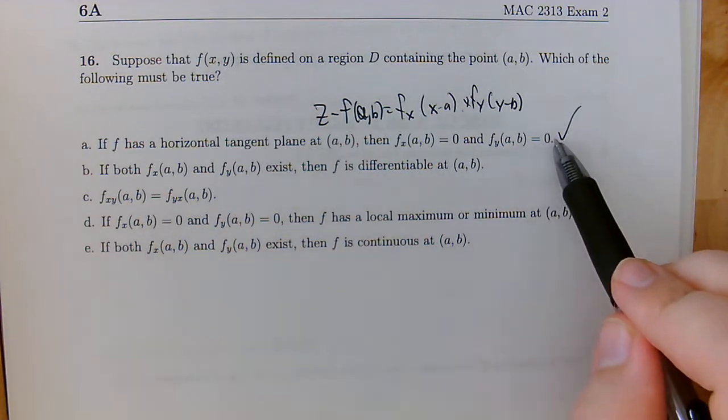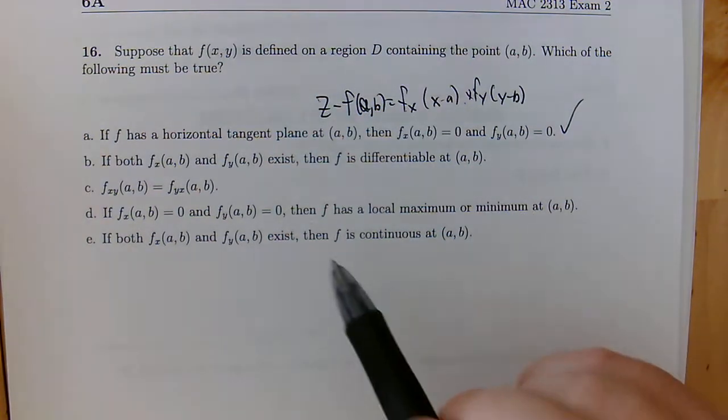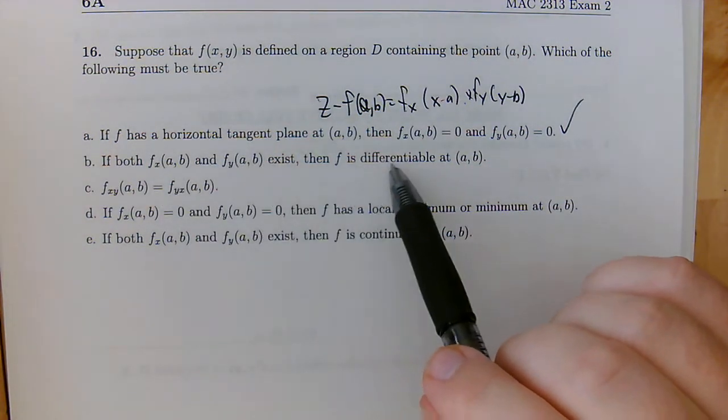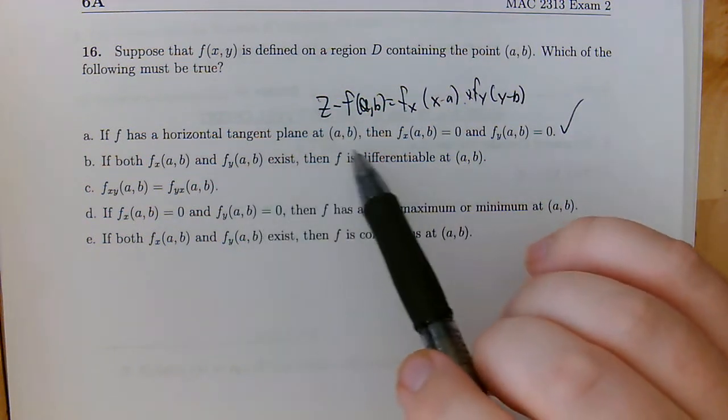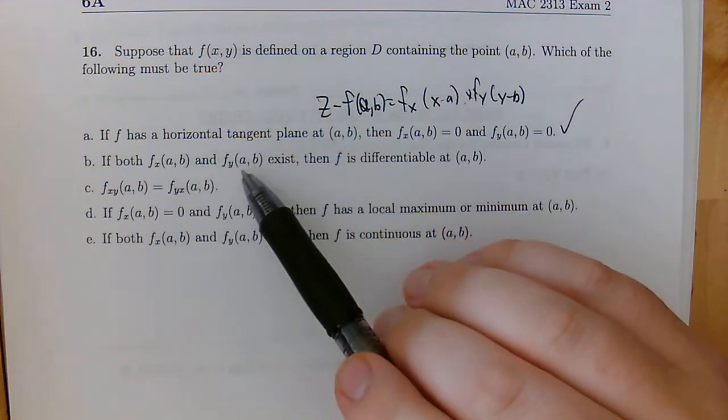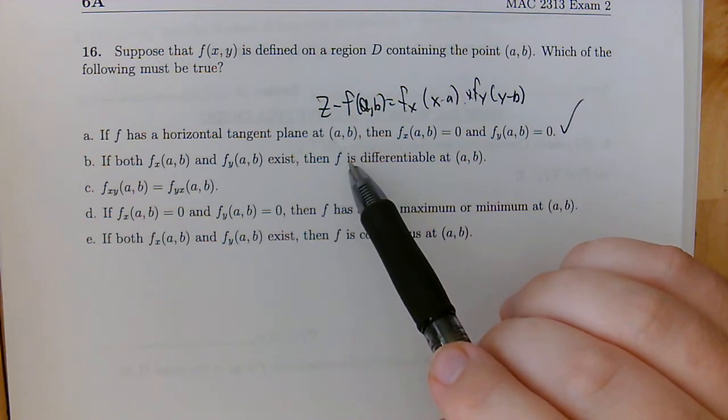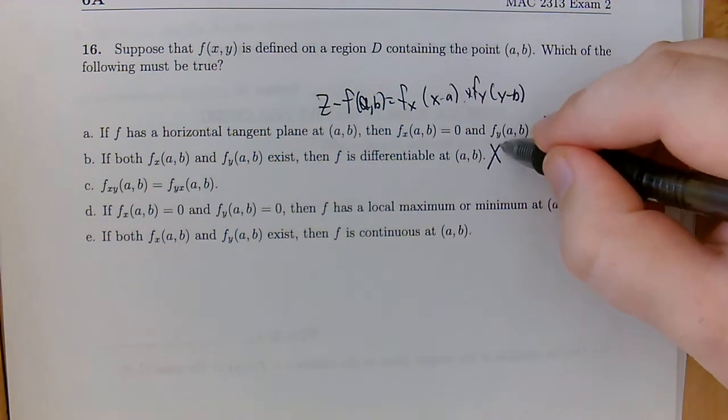Now, if we were on the exam, we would just call it a day here. But let's go over these other statements and see why they're false. So if both of the partial derivatives exist, then f is differentiable at (a,b). Now, we saw an explicit example in class where this didn't end up being true. We were able to get both of our partial derivatives, but then the function wasn't even continuous, let alone differentiable at the point. So we've seen a counterexample to this in class.